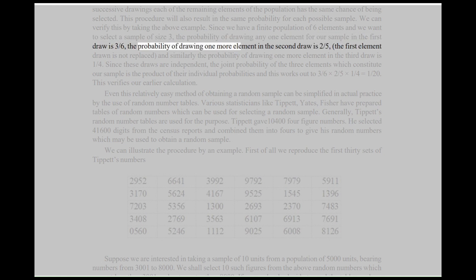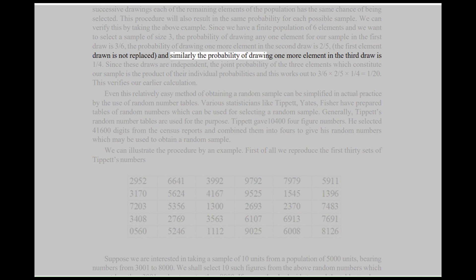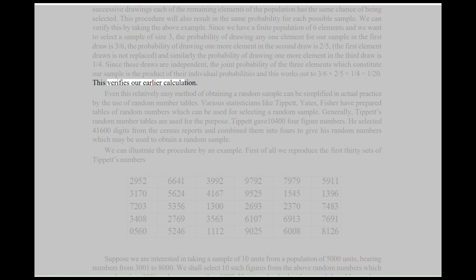Since we have a finite population of 6 elements and we want to select a sample of size 3, the probability of drawing any one element in the first draw is 3/6. The probability of drawing one more element in the second draw is 2/5. Since these draws are independent, the joint probability of the three elements which constitute our sample is the product of their individual probabilities: 3/6 × 2/5 × 1/4 = 1/20. This verifies our earlier calculation. Even this relatively easy method of obtaining a random sample can be simplified in actual practice by the use of random number tables.